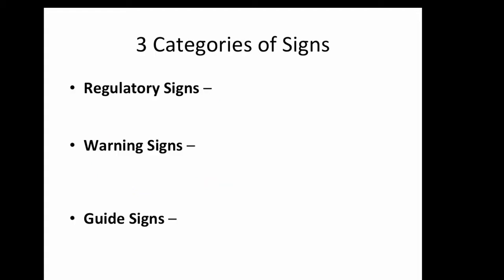We will always know that our signs will fall into three categories. Your regulatory signs tell you information about laws you must obey. They're going to be the things that you can or you cannot do. You've got to follow what that sign says. It's regulating you for a specific reason.